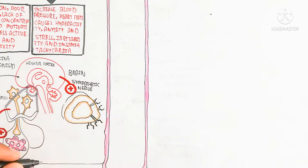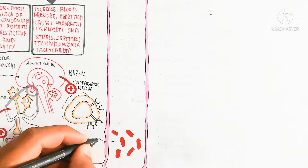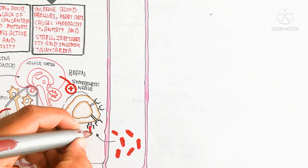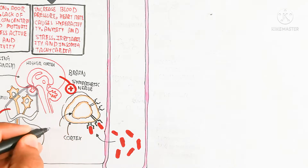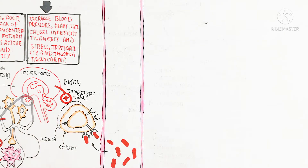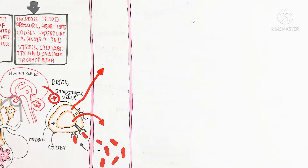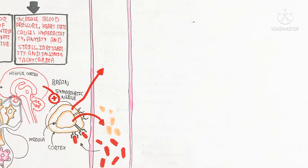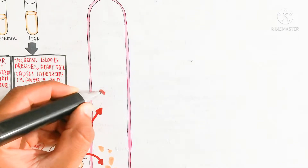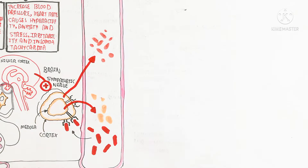ACTH targets the adrenal gland. The sympathetic nerves also stimulate the adrenal gland directly to release corticosteroids. The adrenal gland contains a medulla and a cortex. The cortex contains different steroid hormones, while the medulla contains different hormones. ACTH binds with both the medulla and the cortex to release different types of hormones.